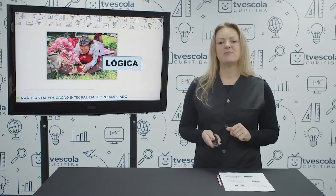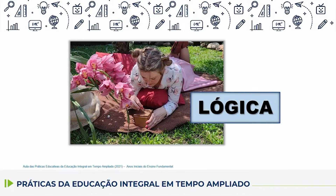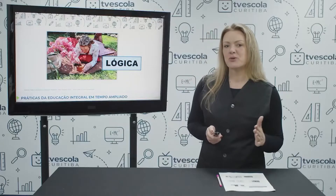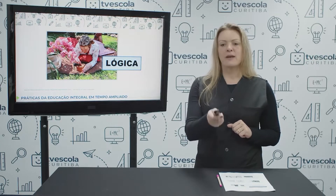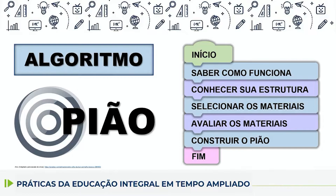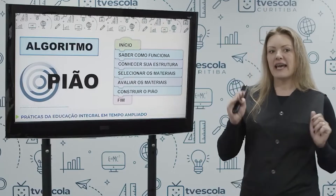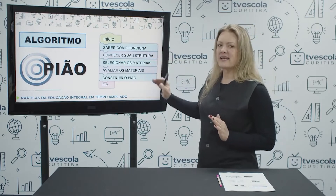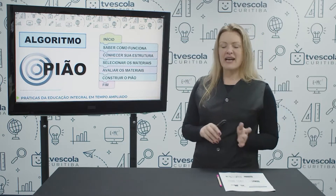Nós vimos também um pouco sobre a vida de Ada Lovelace, que foi a primeira programadora da história. Conhecendo um pouco sobre a vida dela, nós aprendemos sobre algoritmos, que são o passo a passo para atingir um determinado objetivo. Um exemplo que vimos foi a construção de um peão. Todo algoritmo é marcado por seu início, por seu fim, e entre início e fim existe essa sequência, esse passo a passo que nos levará ao objetivo.